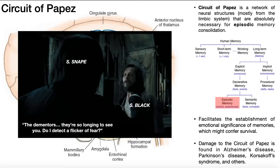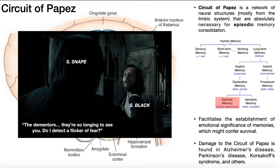A really good example of this is from the third Harry Potter movie, The Prisoner of Azkaban. On the left is Severus Snape, an instructor at the school, and on the right is Sirius Black, who Snape believes is a guilty felon who has escaped prison. There are creatures called dementors that slowly suck your soul away while you're in prison — a known awful experience. Snape says: 'The dementors — they're so longing to see you. Do I detect a flicker of fear?' You can clearly see the look of fear on Sirius Black's face. That's an example where his Circuit of Papez has assigned negative emotional significance to the memory of those dementors in prison, and that emotional significance can actually facilitate survival.